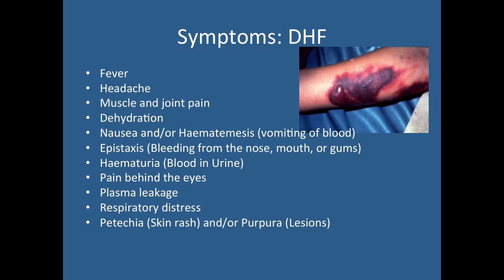DHF can have similar initial symptoms as dengue fever — fever, headache, muscle and joint pain, dehydration — but it becomes a serious problem when you start to get epistaxis (bleeding from the nose, mouth, and gums), hematuria, pain behind the eyes, and plasma leakage. All of this constitutes the hemorrhagic aspect, which can be life-threatening and extremely painful.